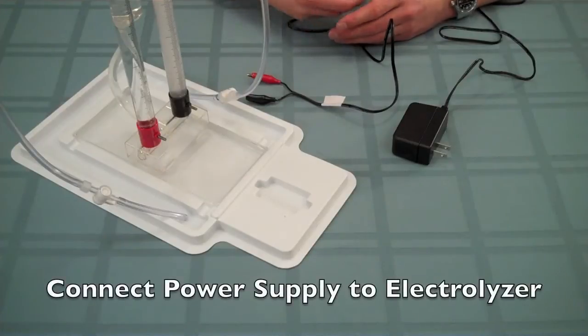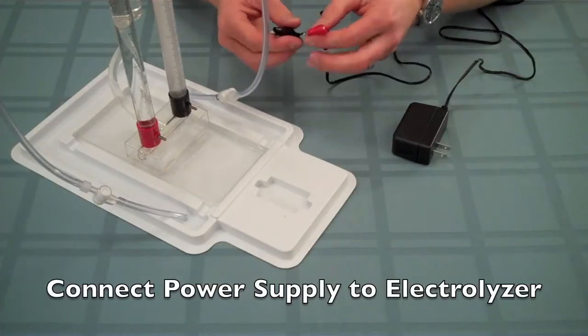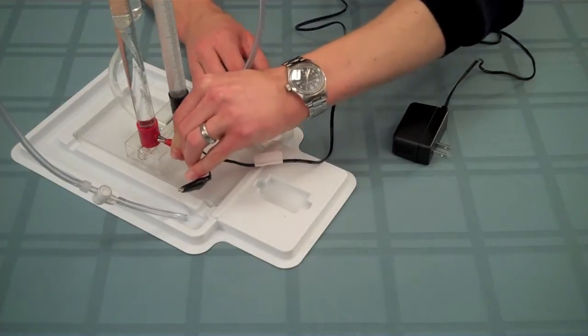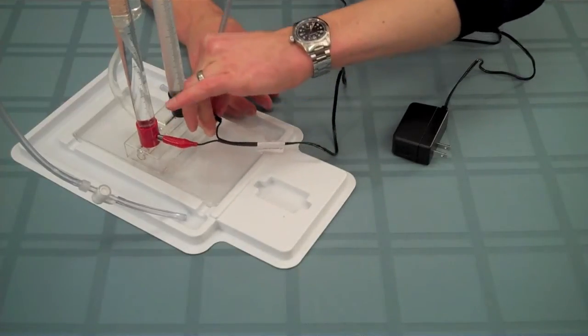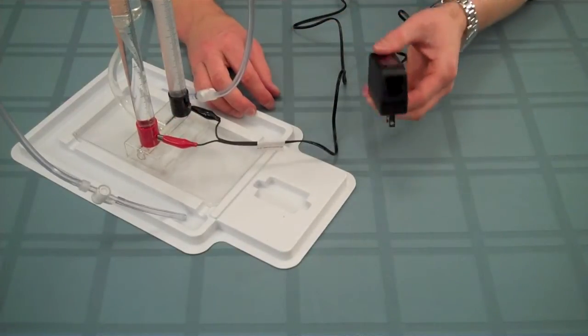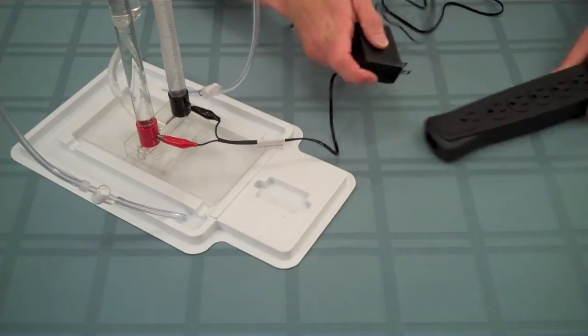Start by connecting the alligator clips of the power supply to the electrolyzer. Connect red to red and black to black. Then go ahead and plug in the power supply into an electrical outlet.